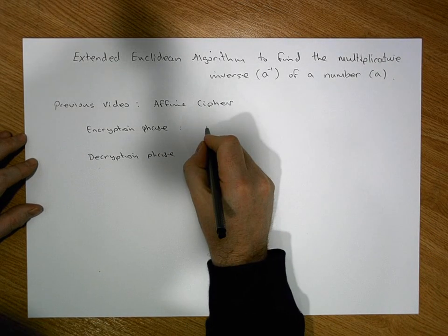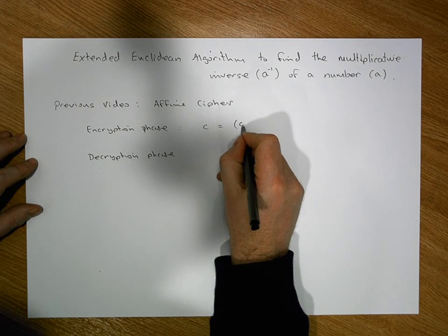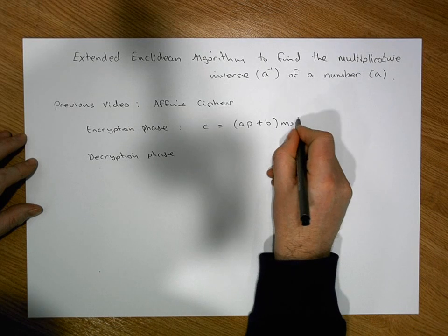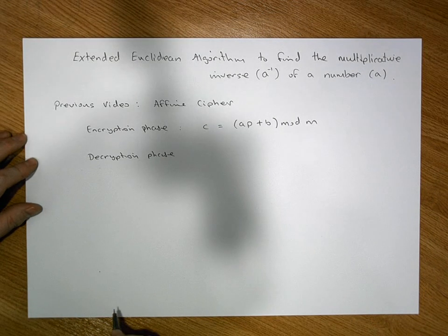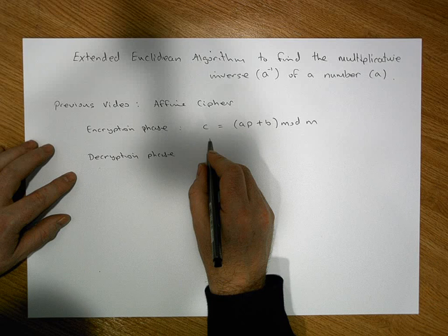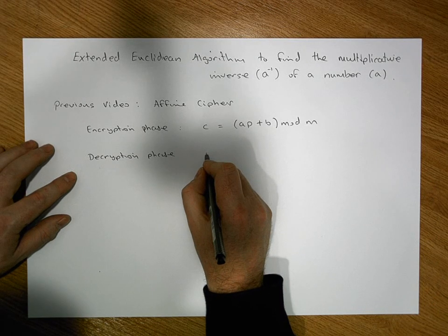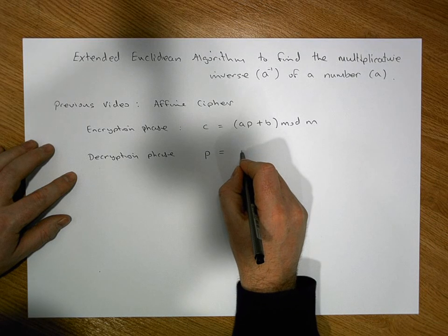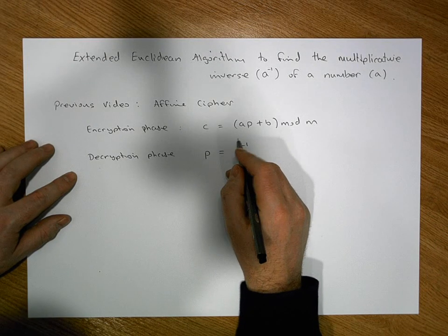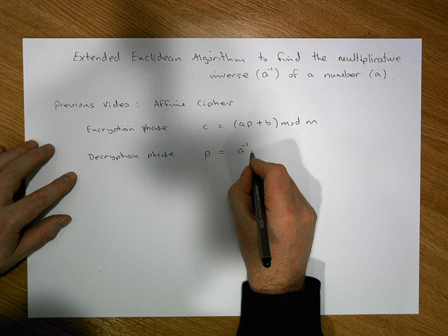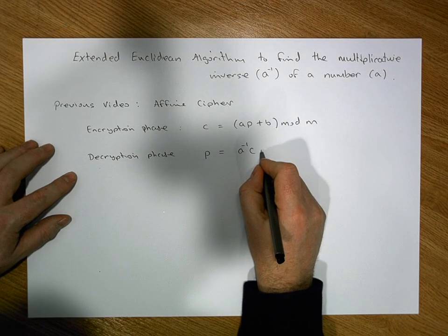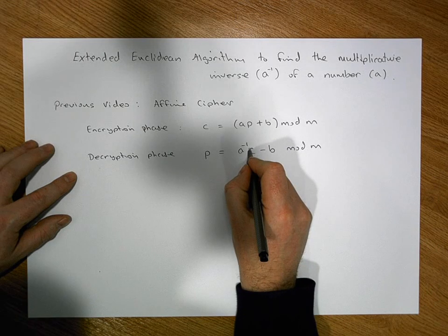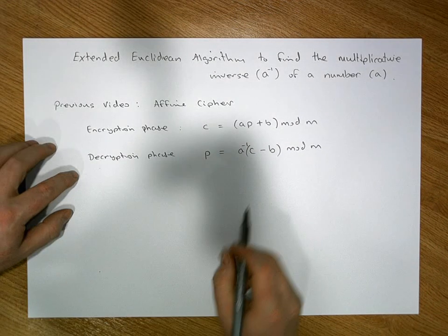The encryption phase was defined as follows: given a piece of plain text, the cipher text c equals a times the plain text plus some number b, modulo the size of our alphabet. The decryption phase was defined as: plain text equals a-inverse times (c minus b), modulo m.